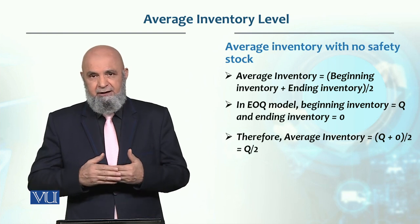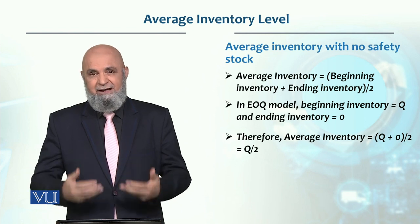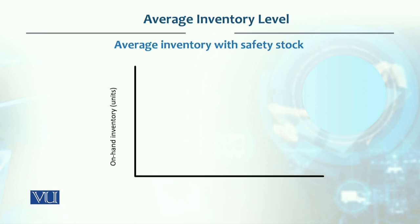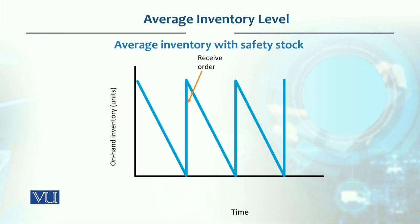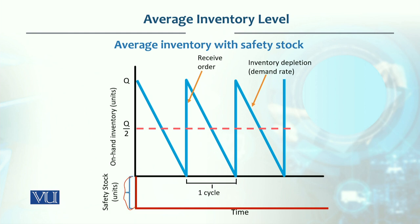So average inventory level is Q divided by 2, in case that we don't maintain safety stock. If we maintain our safety stock, then what is our average inventory level? If we look at this model, this is our received orders and this is our inventory depletion. And this is the average inventory which we maintain, and this one is your safety stock, which we maintain throughout the year.